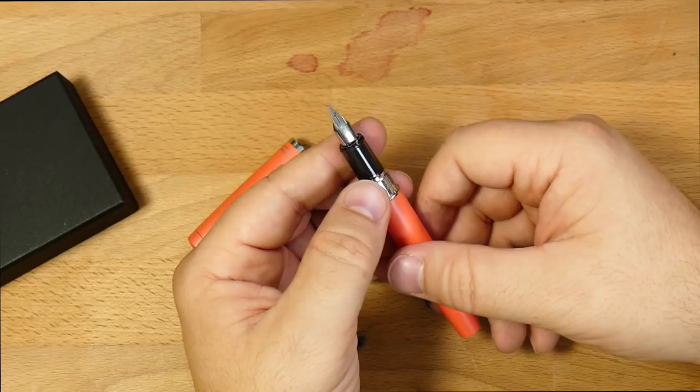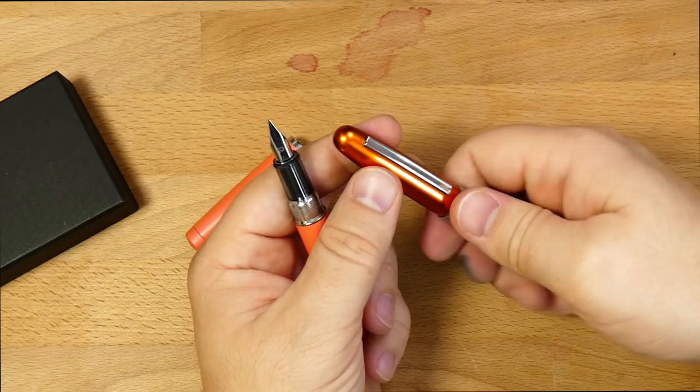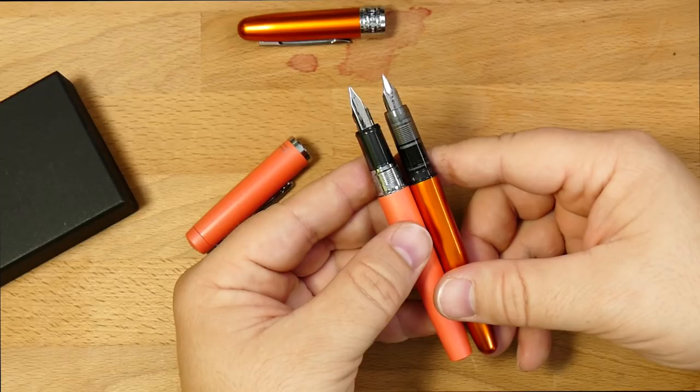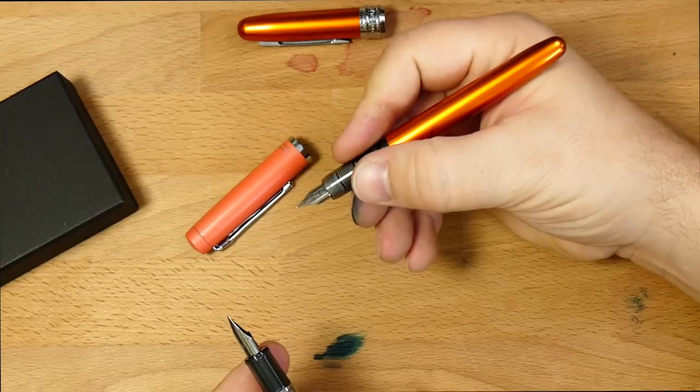Now, you might look at this and say that looks an awful lot like the same nib that they use on the Platinum Plezir and the Preppy. Well, I have one of those handy. This is the Plezir, which is the upgraded metal version of the Preppy. It's actually significantly lighter than the Procyon. I hadn't measured them side by side. But as you can see, these are not the same nib. The nib is significantly larger in the Procyon, and the section's a little bit shorter.